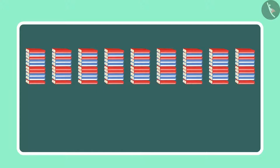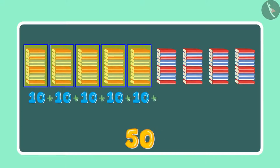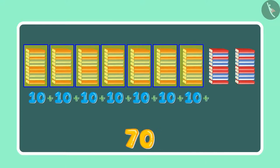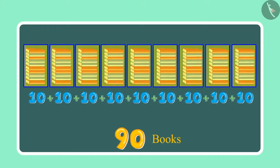Okay, 9 sets of 10, which means 10, 20, 30, 40, 50, 60, 70, 80 and 90. This means 90 books.